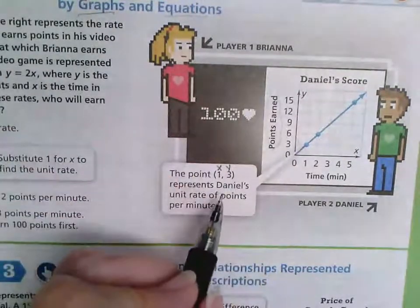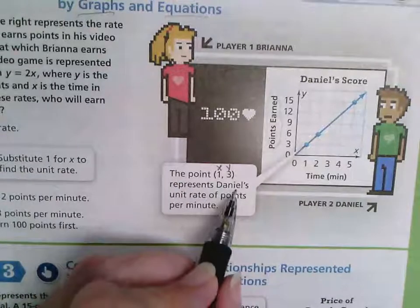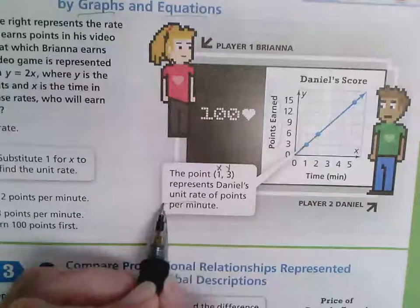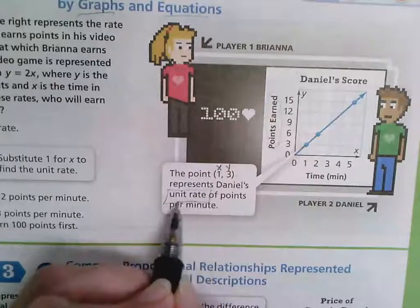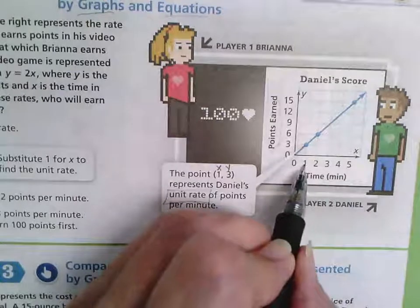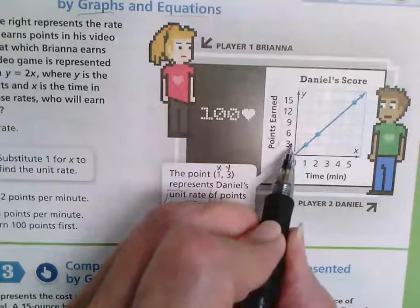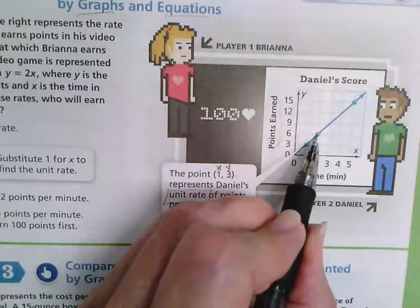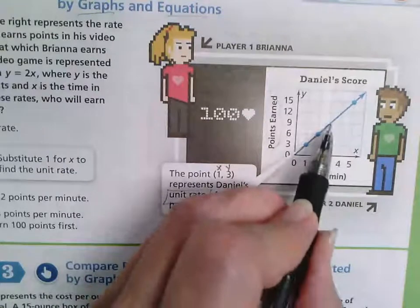This represents Daniel's unit rate, in other words his constant of proportionality, of points per minute. So in one minute he gets three points, in two minutes he gets six points, in three minutes he gets nine points, four minutes he gets twelve points.